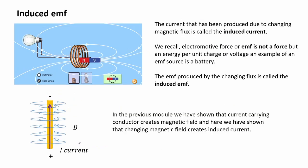The current that has been produced due to changing magnetic flux is called the induced current. Electromotive force or EMF is not a force but an energy per unit charge or voltage. An example of an EMF source is a battery. In this case the changing flux is able to create an EMF which acts like a battery having an electric potential difference at the ends of the solenoid. This EMF is called the induced EMF.